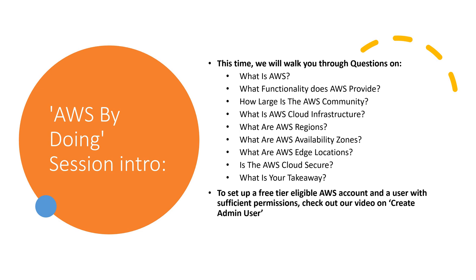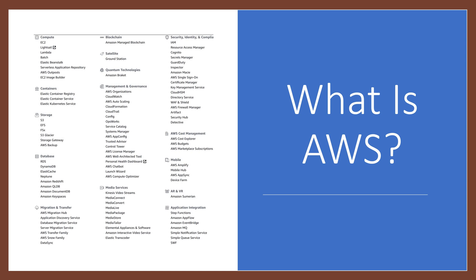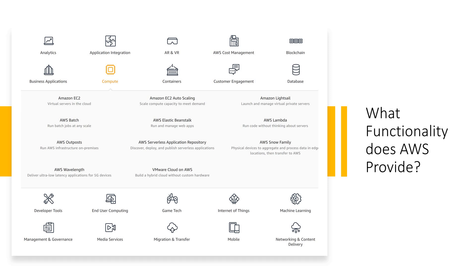What is AWS? Amazon Web Services (AWS) is a comprehensive and universally adopted cloud platform offering over 175 fully featured services from data centers globally. AWS has great experience, maturity, reliability, security, and performance that you can depend upon for your most important applications.